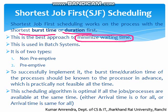At that point we will find that Shortest Job First is very optimal and gives minimized waiting time in comparison to all other CPU scheduling algorithms. This algorithm is used in batch systems and it is of two types.